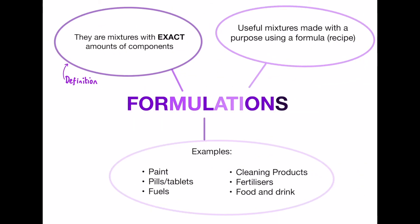Next we have formulations. Formulations are effectively a recipe — they are useful mixtures made with a purpose using a formula, so using a set of instructions. Similarly to a recipe, they are exact amounts of their components, just like a cake has a certain amount of flour and sugar. Real life examples include paint, pills and tablets, fuels, cleaning products, fertilisers, and food and drink. For example, if you look on the back of a toothpaste tube you will see it is made up of a load of different chemicals and mixtures — that is an example of a formulation.